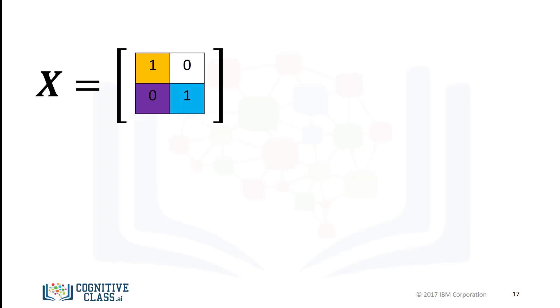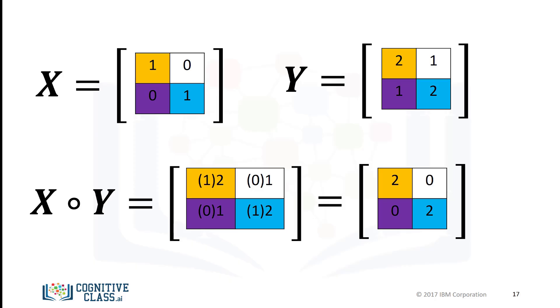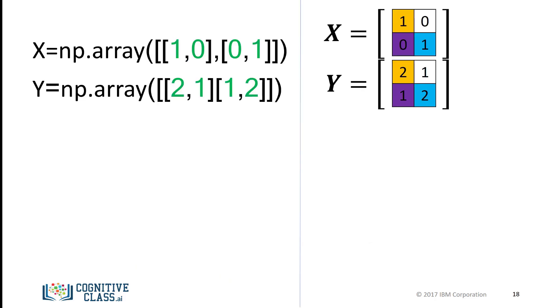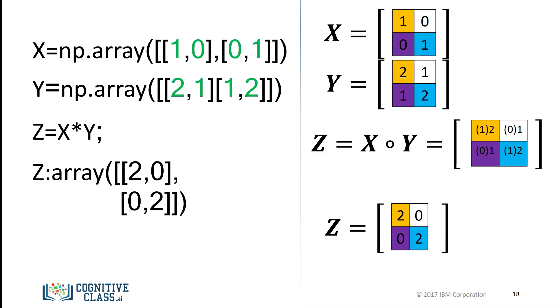Multiplication of two arrays corresponds to an element-wise product, or Hadamard product. Consider array X and array Y. Hadamard product corresponds to multiplying each of the elements in the same position, i.e., multiplying elements contained in the same color boxes together. The result is a new matrix that is the same size as matrix X or Y, where each element is the product of the corresponding elements in X and Y. We can find the product of two arrays X and Y in one line and assign it to the variable Z. The result is identical to the Hadamard product.